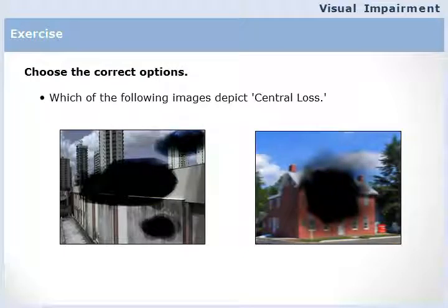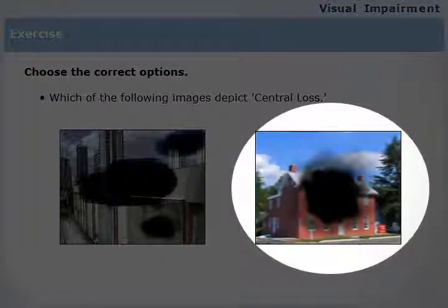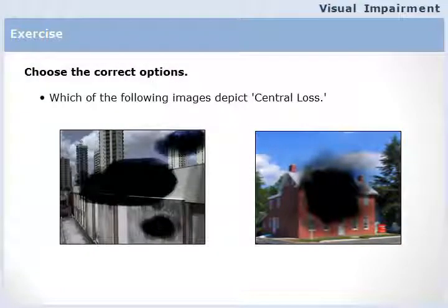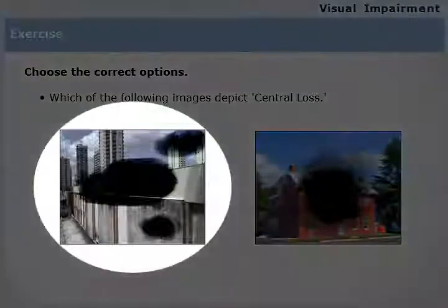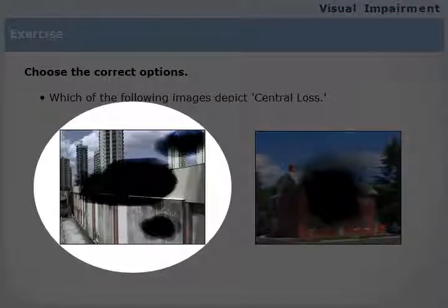Which of the following images depicts central loss? In central loss, a visually impaired person can see all the sides except the center. The other image is of scotoma, where a visually impaired person has vision only in patches.